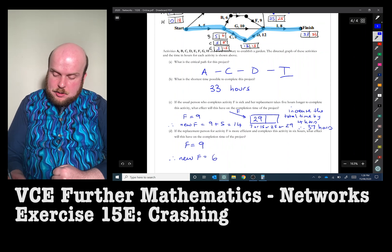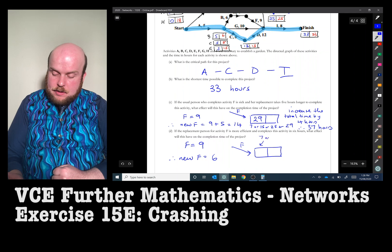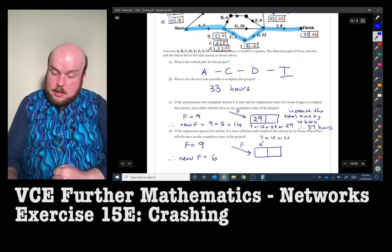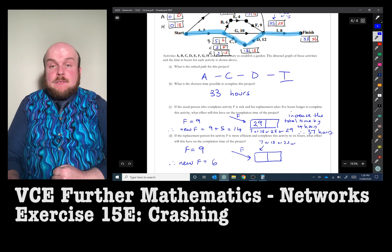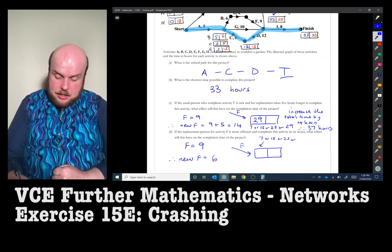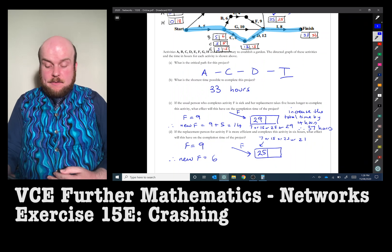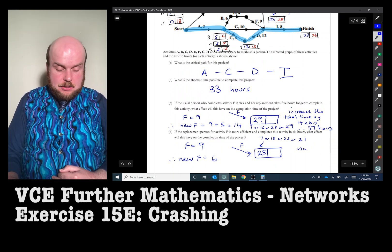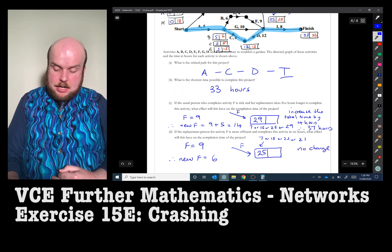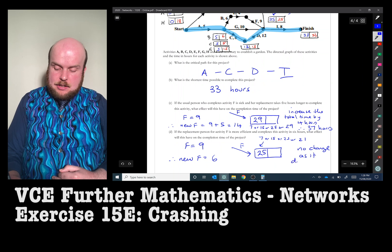So therefore, F goes into this box. The choices are seven or 15 or 25, or 15 plus six, and 15 plus six is 21. So what that means is that the largest number is still 25. Therefore, no change, as it does not affect the critical path.